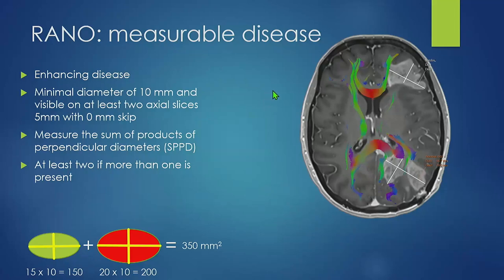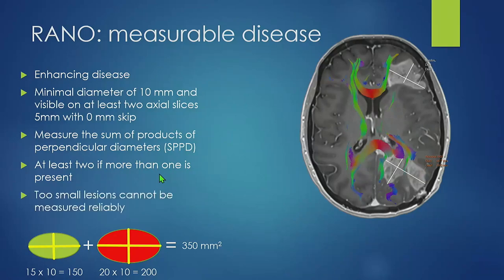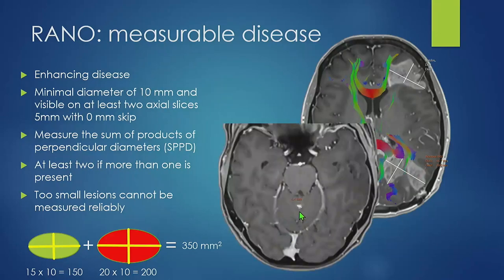The RANO criteria define measurable disease. When we talk about measurable disease, we're talking about enhancing disease on post-contrast imaging. It defines a minimal diameter of 10 millimeters. For clinical trials, we can be asked to measure the sum of products of the perpendicular diameters, and at least two lesions are to be measured if more than one is present. Two small lesions cannot be measured reliably, which is why the magic number is 10 millimeters. Small lesions have to be addressed in the clinical report, but they are not included as measurable disease.